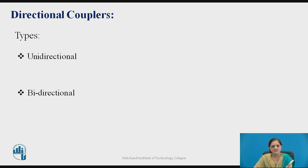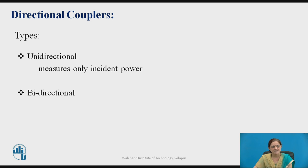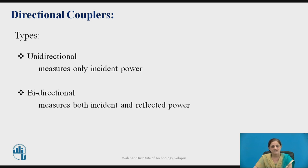There are two types of directional couplers. One is the unidirectional type, which is used to measure only the incident power. Whereas the bi-directional coupler is used to measure both incident as well as reflected power.